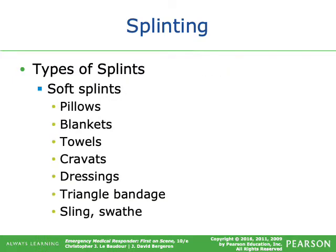Types of splints: Soft splints — improvised — include pillows, blankets, and towels. More common soft splints are cravats, dressings, triangle bandages, and sling and swath.